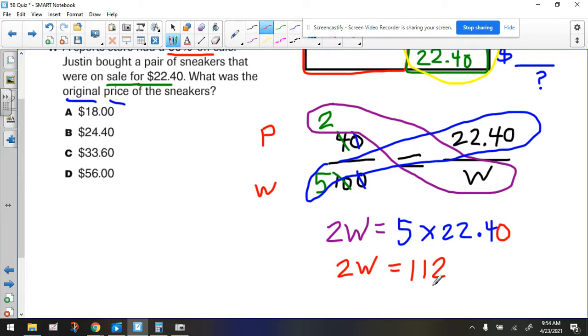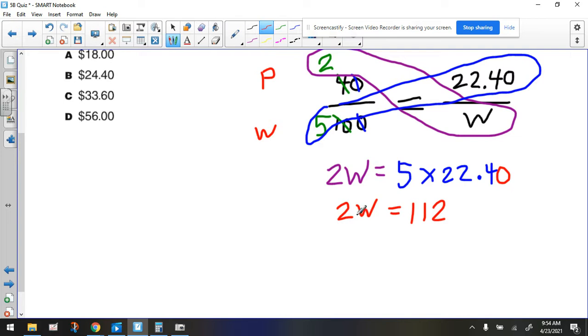Alright, so what's next? We have to ask ourselves, where's the variable? What's happening to it? It's being multiplied with 2. And we have to ask ourselves whenever we're solving an equation, what's the opposite of multiply by 2? And that would be to divide by 2. We're going to do that on both sides of the equation to keep it balanced.